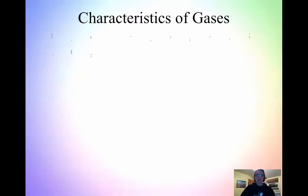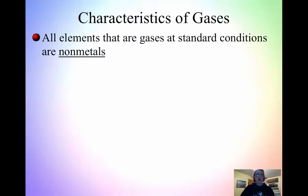Characteristics of gases: all elements that are gases at standard conditions are non-metals. Almost all non-metals are gases at standard conditions, with a few exceptions. Bromine and iodine are two of the big ones that exist as liquid and solid, respectively, at standard conditions. Everything else, every other non-metal, is a gas.